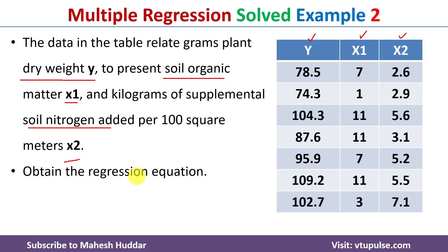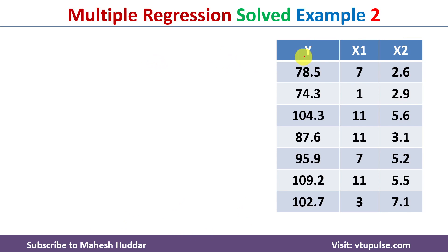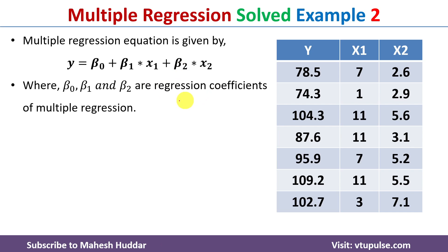Given this data, we need to obtain the regression equation and predict the plant dry weight when soil organic matter equals 5 and soil nitrogen equals 4. Here, y is the dependent variable, x1 and x2 are the independent variables. With one dependent and two independent variables, the multiple regression equation is: y = β0 + β1·x1 + β2·x2, where x1 and x2 are the independent variables.